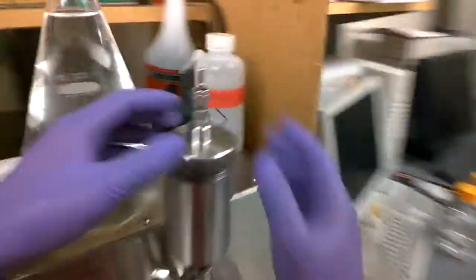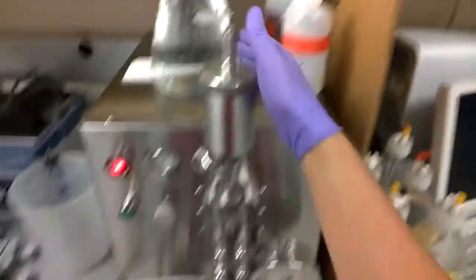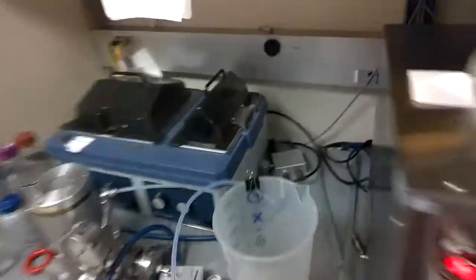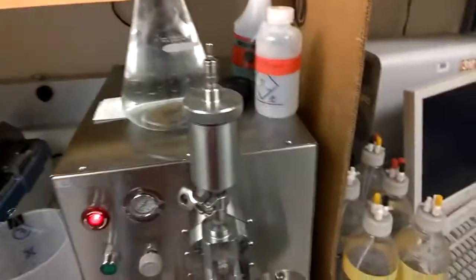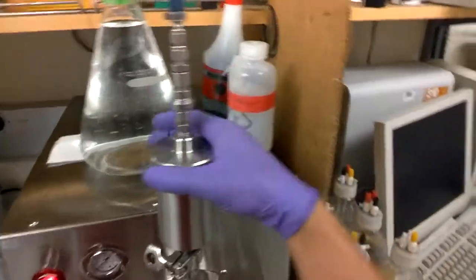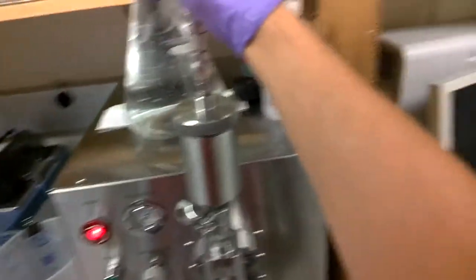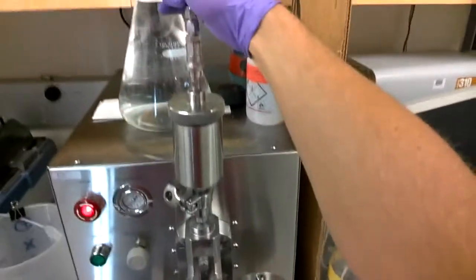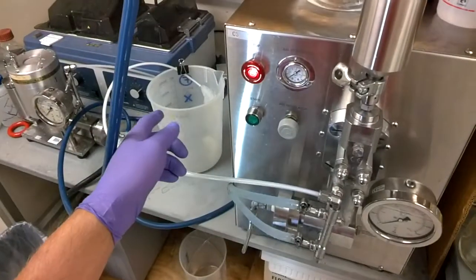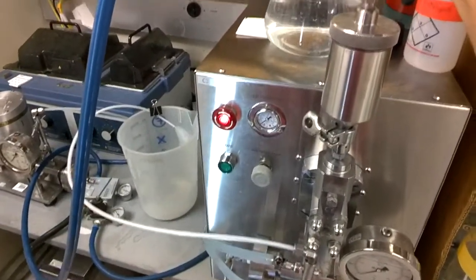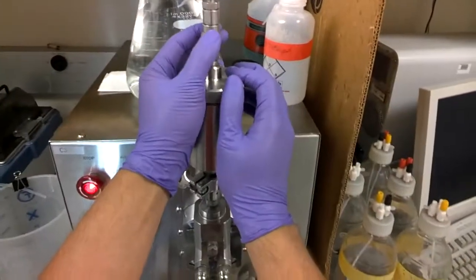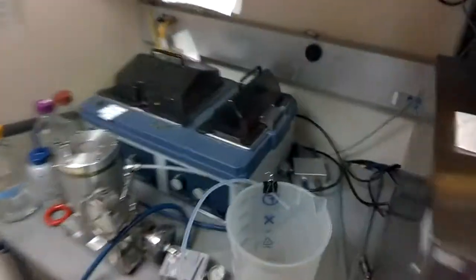And so the first thing we're going to do with Emulsiflex is we're going to wash it. And so to wash it, this is connected to house air, so building air. And so it's stored in ethanol, and we need to flush it out. And so you just click it in, and then you can see over there basically all the ethanol comes out. And once it stops coming out, you're just pulling this down, up, and then it's good.